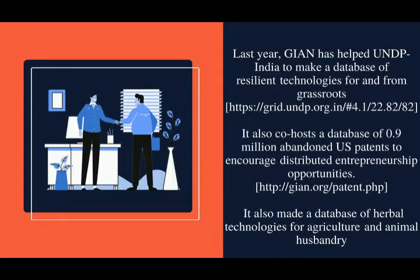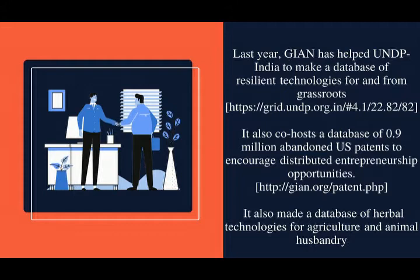Last year, GIAN helped UNDP India to make a database of Brazilian technologies for and from grassroots, which is available at grid.undp.org. It also co-hosts a database of 0.9 million abandoned US patents to encourage distributed entrepreneurial opportunities.